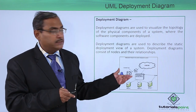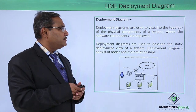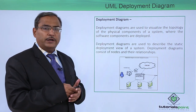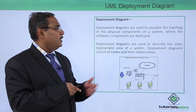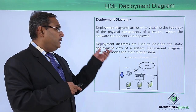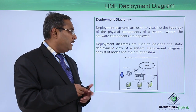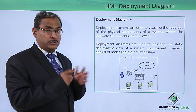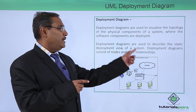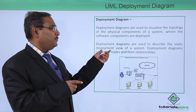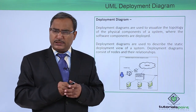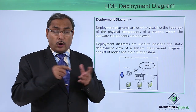Deployment diagrams are used to visualize the topology of the physical components of a system where the software components are going to be deployed. Deployment diagrams are used to describe the static deployment view of a system — it is not dynamic, it is static. Deployment diagrams consist of nodes, their respective relationships, their respective connections, and their respective ordering.